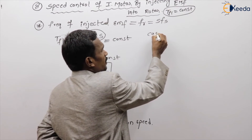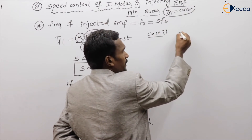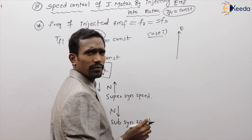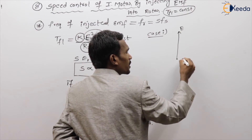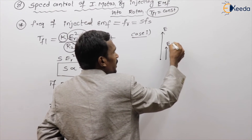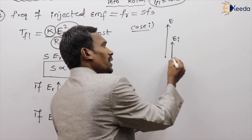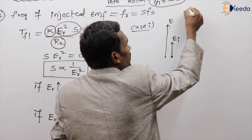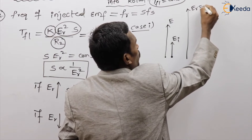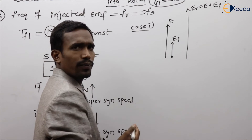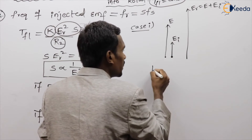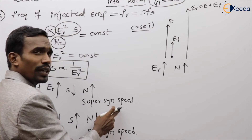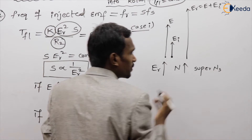Case one: the injected EMF is exactly in phase with the rotor EMF. For example, if the rotor EMF is 100 volts and the injected EMF is 50 volts, the resultant ER equals the actual EMF plus the injected EMF. So ER increases, and therefore speed increases — this is called super-synchronous speed.